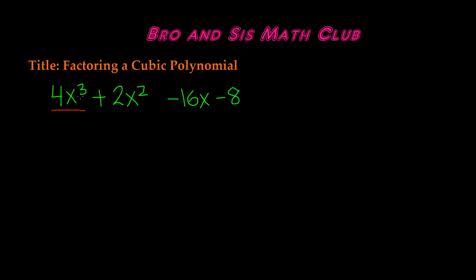When you have a polynomial that has the first term to be cubed, it will be called a cubic polynomial. So 4x cubed is going to make this polynomial a cubic polynomial.